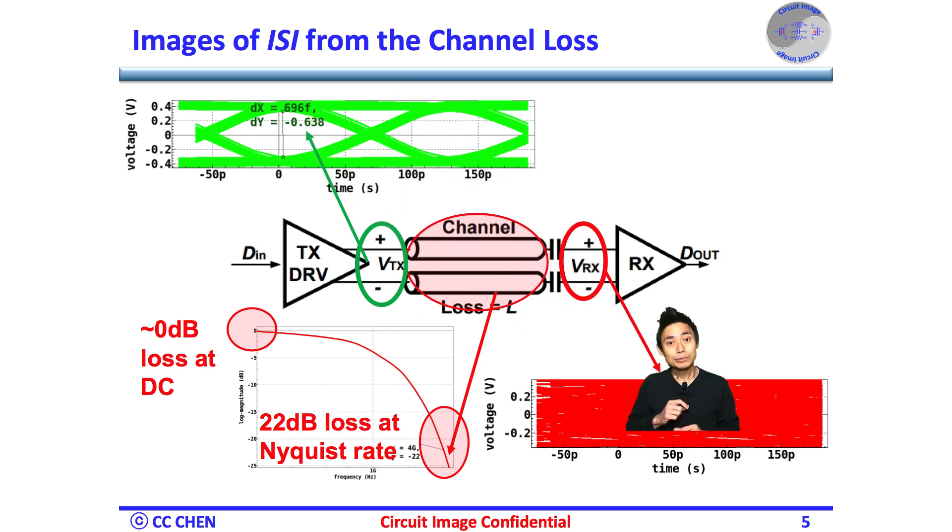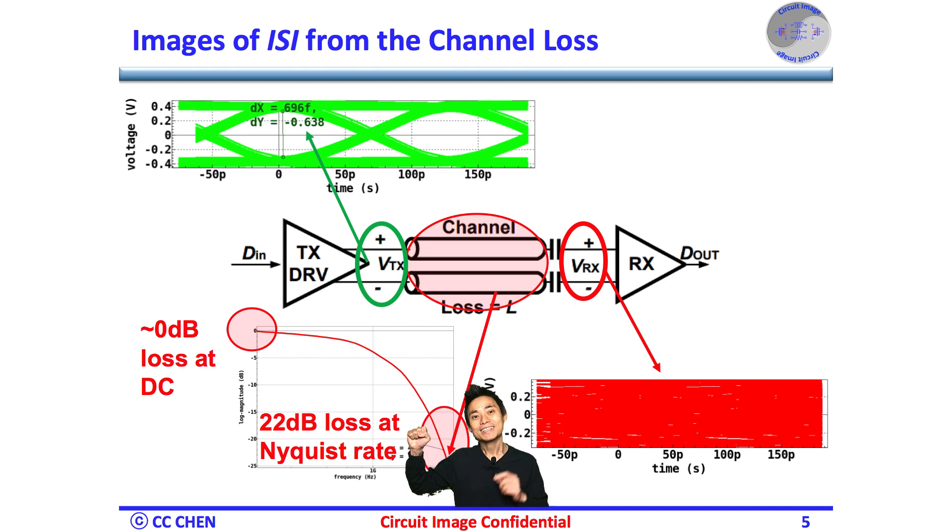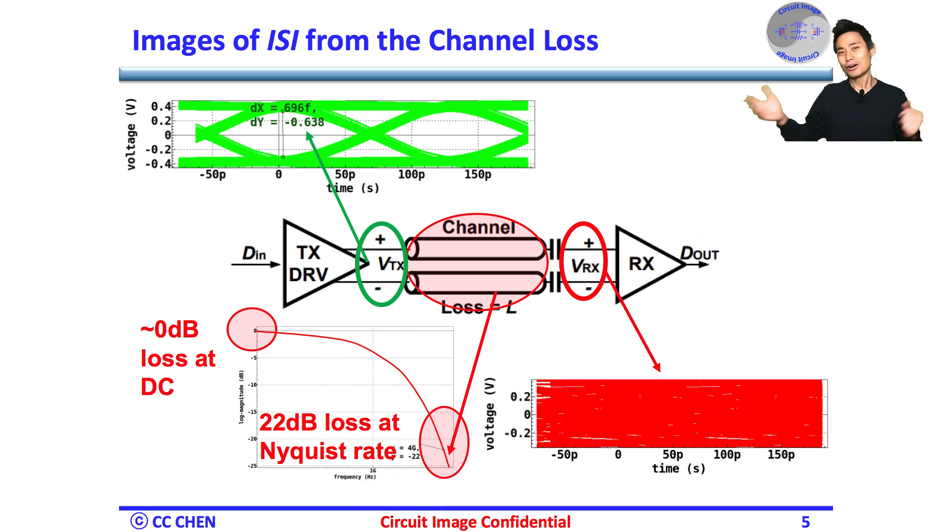The input eye height of the RX or the channel output is zero. Does this mean the whole SerDes link will fail under 22 dB loss in the link budget with no hope? Of course not,